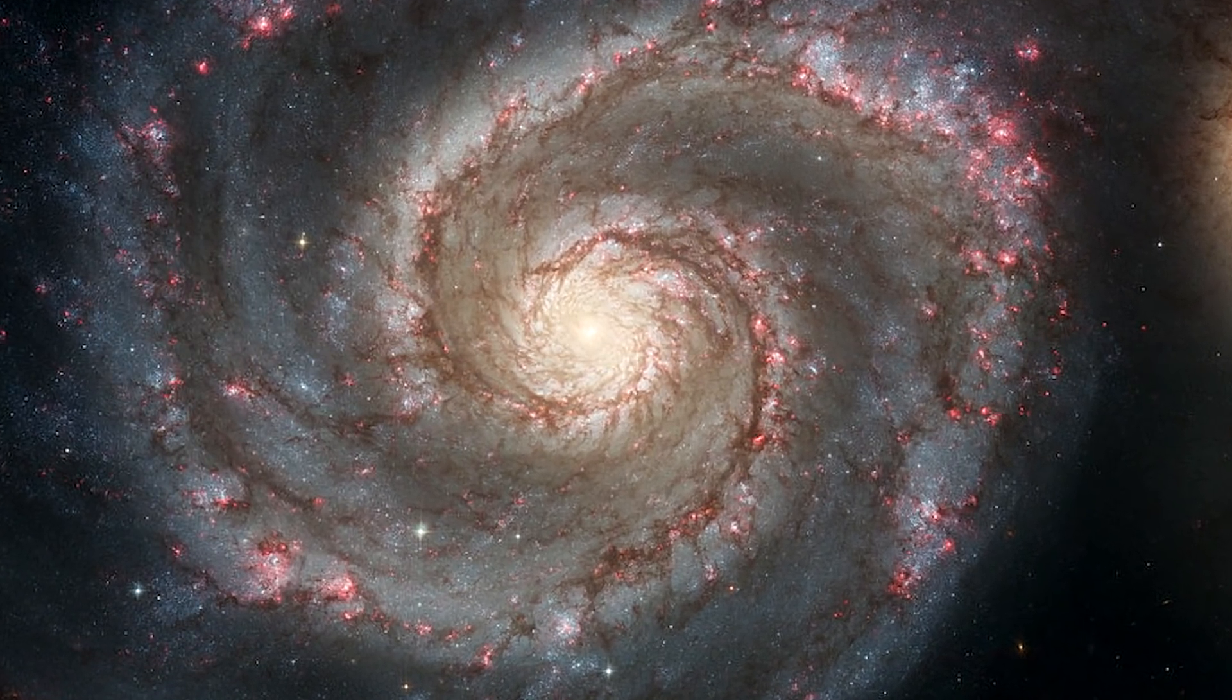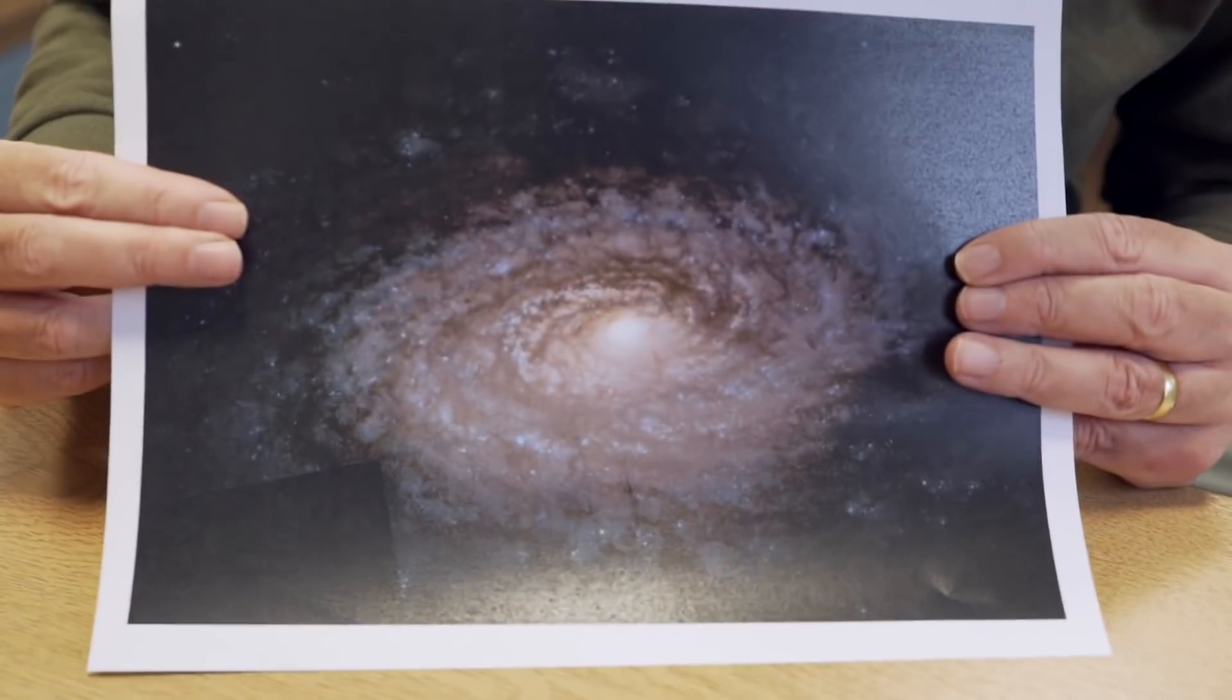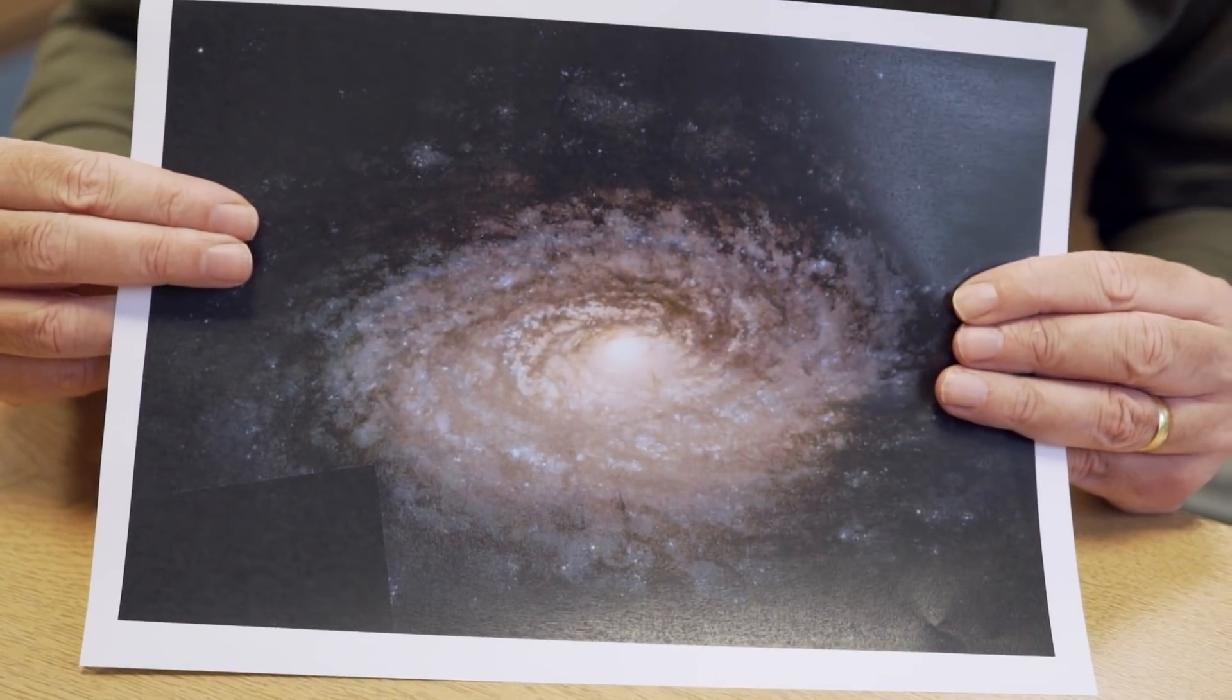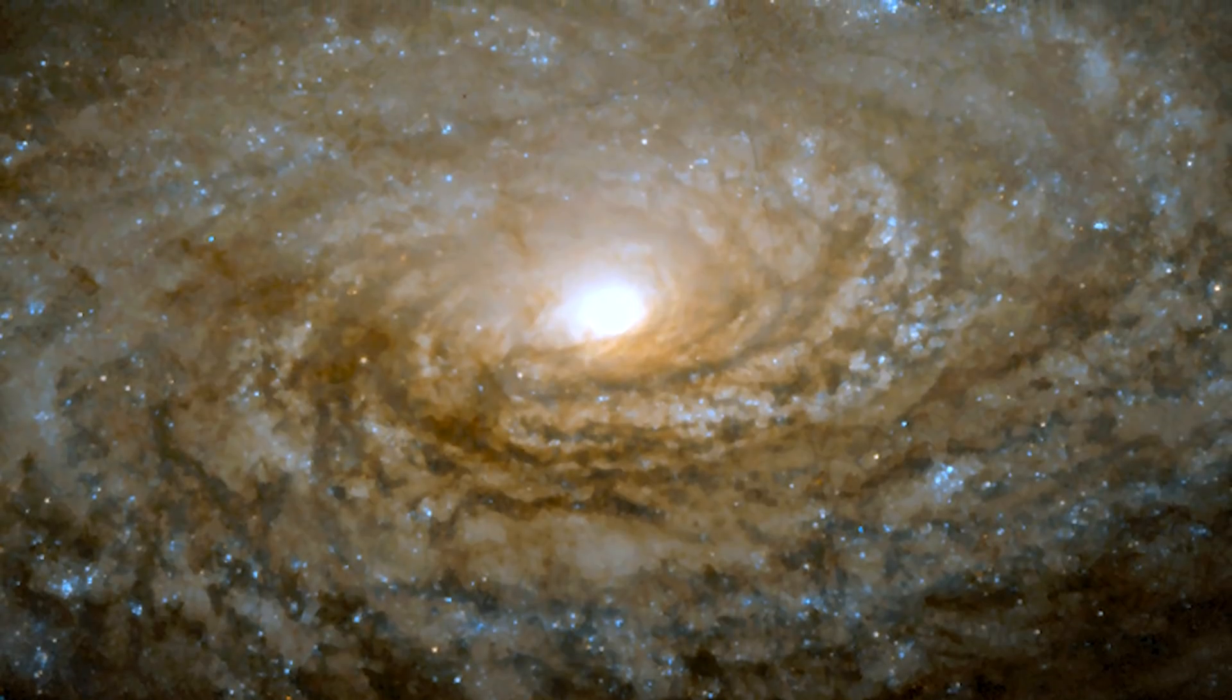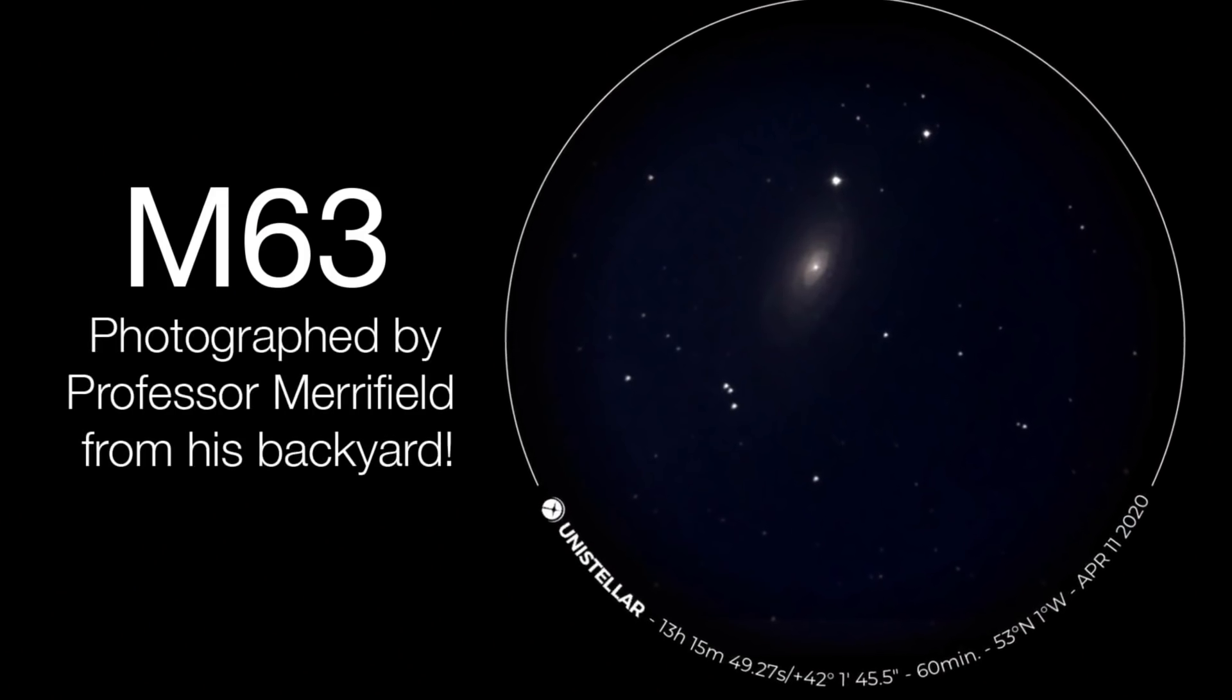Messier 51 is a beautiful grand design, so it has two big spiral arms, whereas this is what's known as a flocculent spiral, in that it doesn't have grand design structure. It has these little bits of spiral arms, which is why it ends up being called the Sunflower Galaxy, because they look like the little petals of a sunflower.